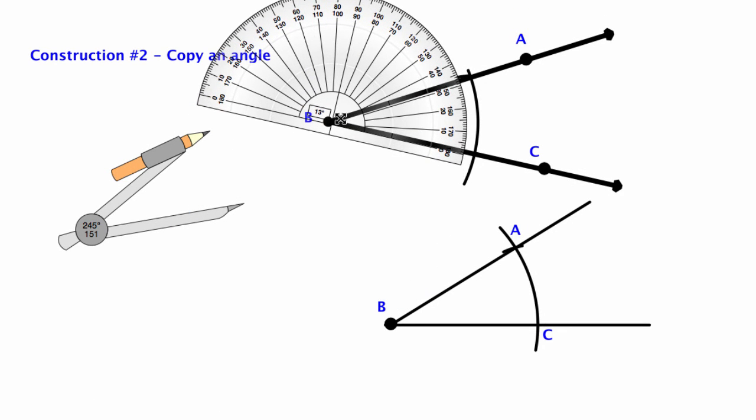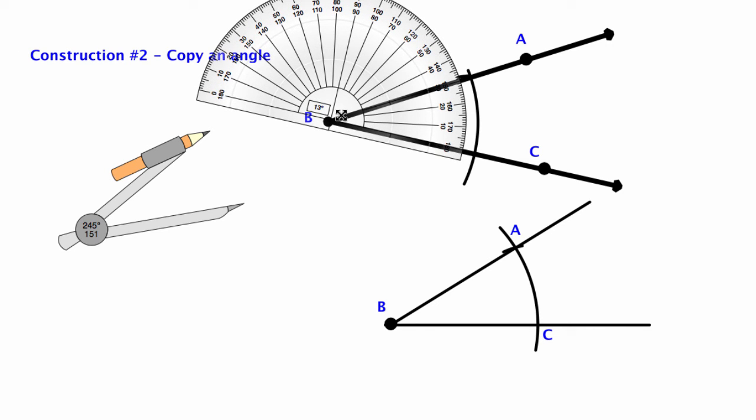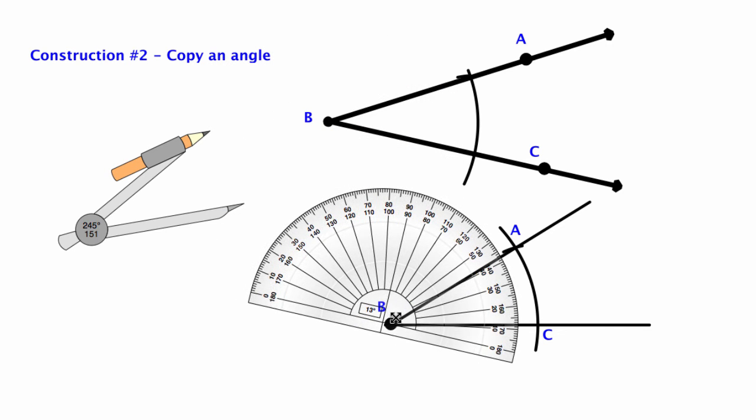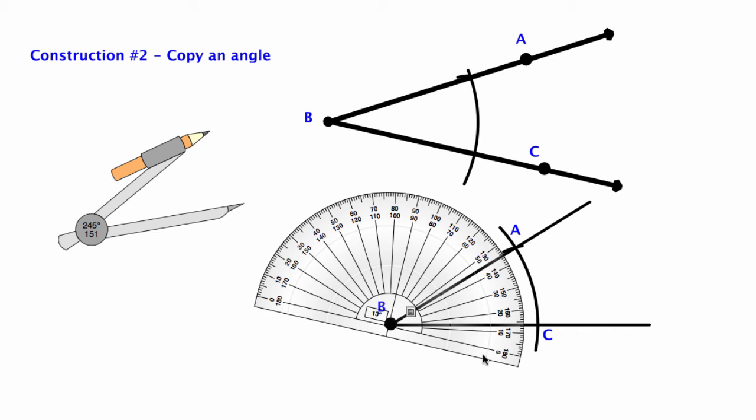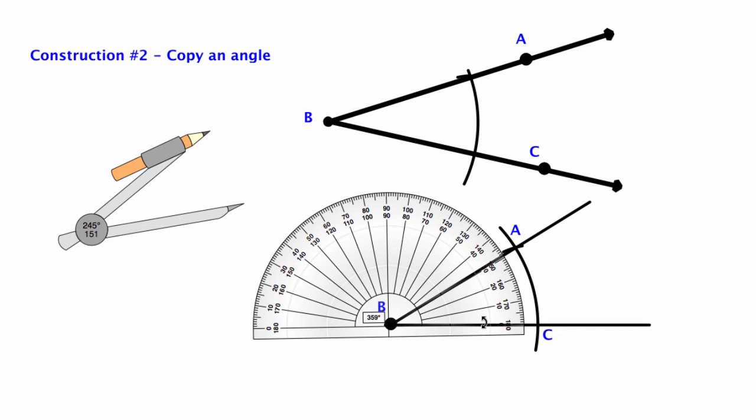Now if I want to really see how accurate I am I can take a protractor and see how I did. The first angle looked like it was around 30 degrees and if I check the one I tried to copy it looks like it's also around 30 degrees. So I did pretty well with that.